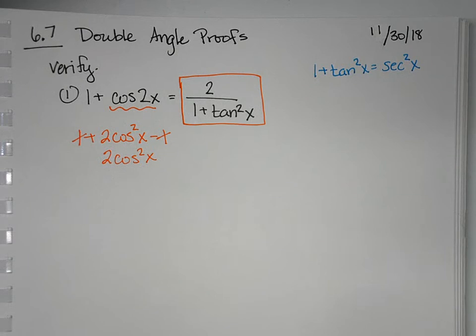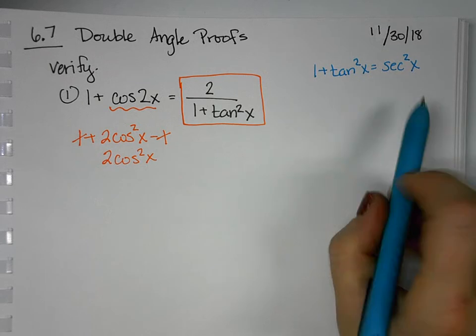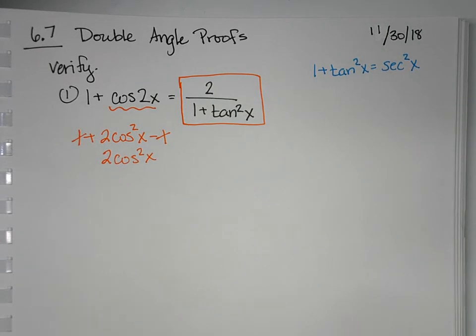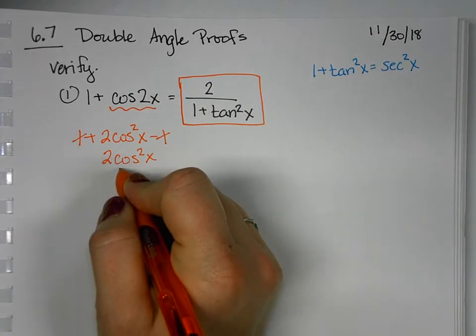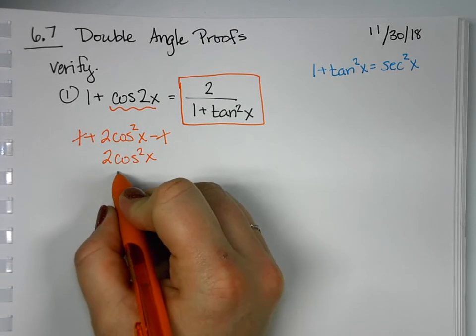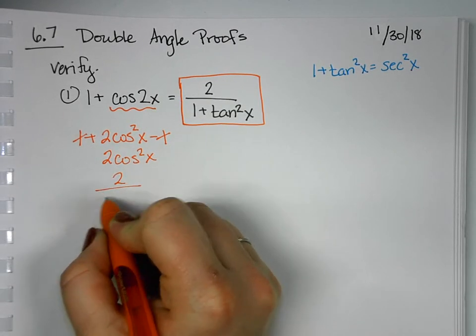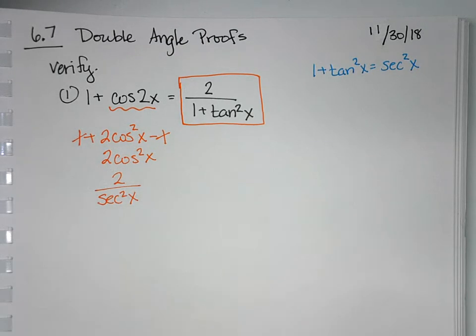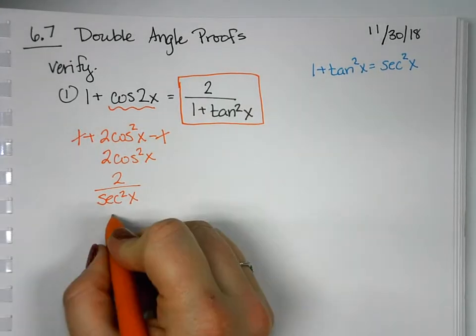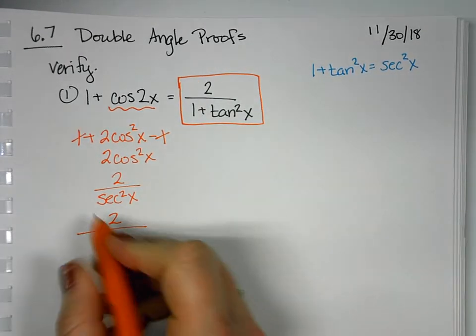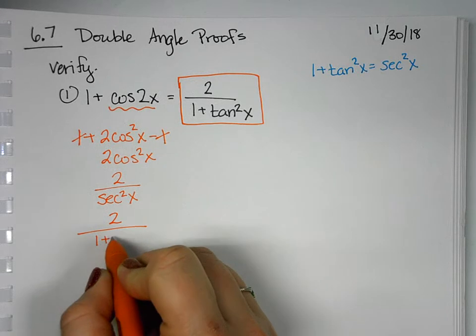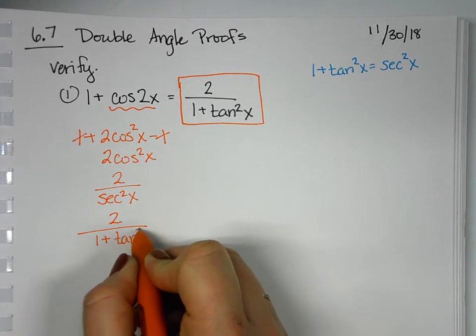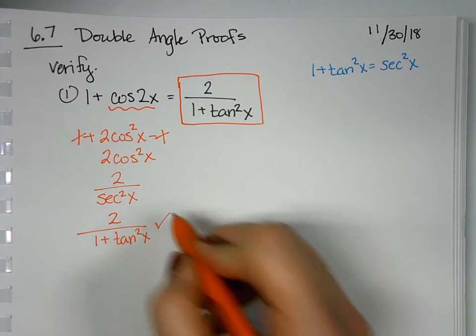I want to try to figure out is there a way I can turn a cosine into a secant. Well, it just happens that cosine, if I move the cos²x to the bottom, I can turn it into its reciprocal secant. Now using this Pythagorean identity, I can substitute in for sec²x: 1 + tan²x, and we have our match.